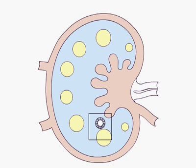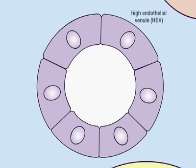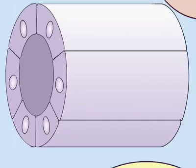Naive T lymphocytes leave the bloodstream across the specialized endothelial walls of blood vessels, called high endothelial venules, or HEV, in the T-cell areas of lymphoid organs.